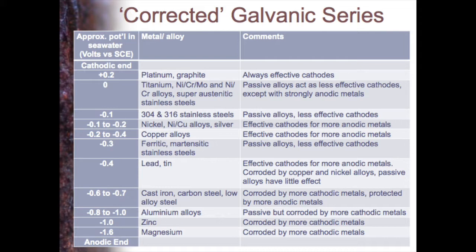Stainless steels are less effective cathodes. Nickel alloys and copper alloys are very effective cathodes for more anodic metals. Normal stainless steels — ferritic and martensitic — passive, less effective. Lead and tin can be effective cathodes. Iron is corroded by more cathodic metals and protected by more anodic ones — it will certainly be affected by copper and nickel alloys, and less affected by stainless steels. Aluminium is passive but corroded by more cathodic metals. Zinc and magnesium have very anodic potentials, so connecting them to most common metals means they'll obviously be corroded.